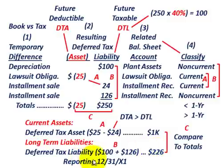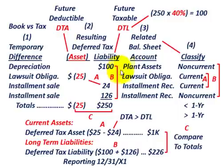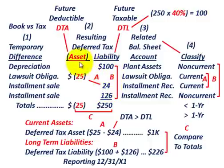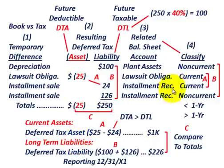We didn't go into all the calculations for deferred tax assets or liabilities — the key point is classifying them correctly. If it's a non-current amount, you have to group all non-current amounts together. Had some of the non-current items been deferred tax assets, they would have been netted against the liabilities. Current amounts get reported under current assets on the balance sheet.